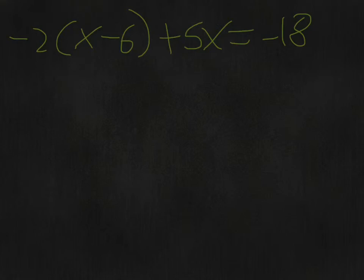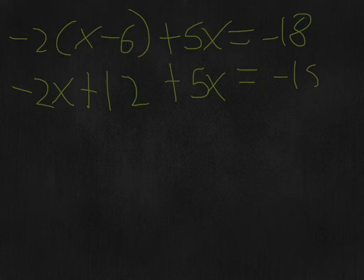The first thing you want to do is distribute the -2 because of the parentheses. So you have -2 times x, which is -2x, and then -2 times -6, which leaves you with positive 12 (because negative times negative is positive), plus 5x = -18.